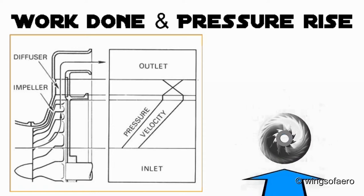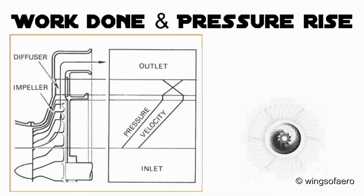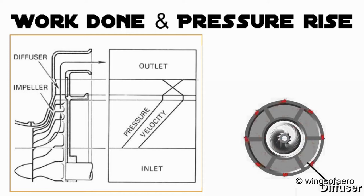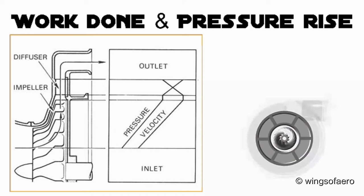To convert the kinetic energy of the fluid at the impeller outlet gradually into pressure energy, diffuser blades mounted on a diffuser ring are used. The stationary blade passages are formed with an increasing cross-sectional area, which reduces the flow velocity and hence increases the static pressure of the fluid.